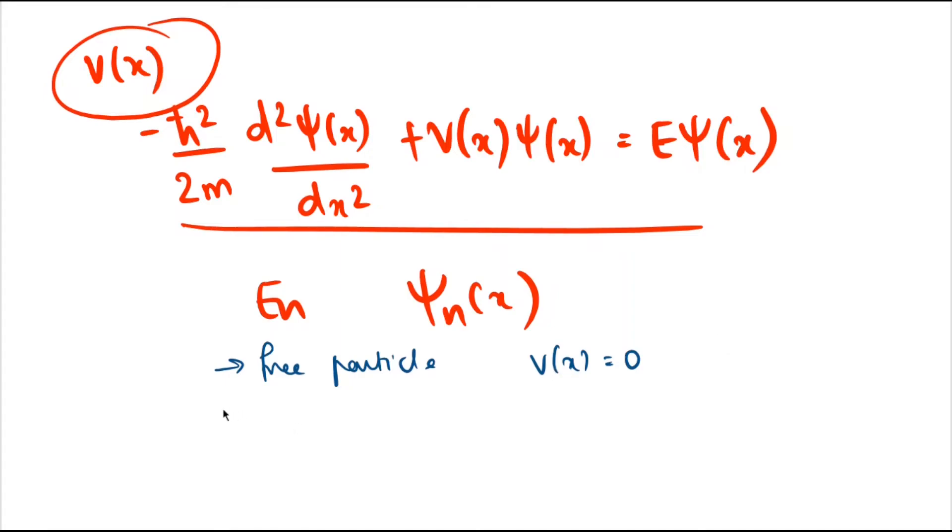Second is the potential step, where you can see that there is a finite potential V0, and suppose the particle is coming from here. If the energy of the particle is greater than V0, it will pass through the potential step.